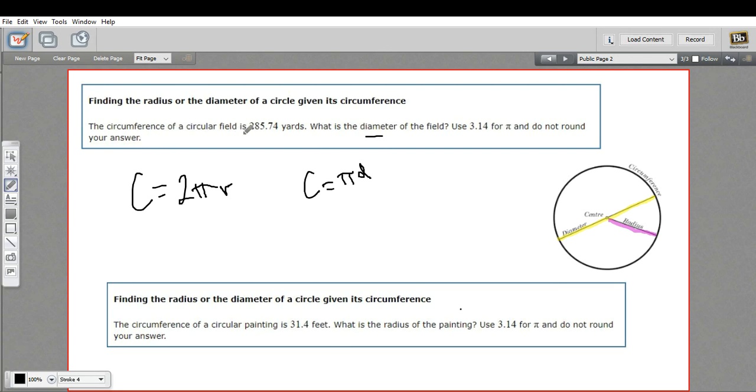This problem says the circumference of a circular field is 285.74 yards. What's the diameter of the field? And use 3.14 for π. Pi is one of those numbers that the decimal goes on forever, so we usually use an approximation of π. And in this case, approximating to 3.14 is good enough. And it says do not round your answer.